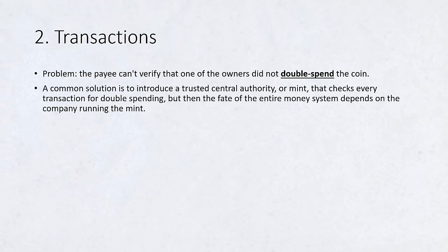A common solution is to introduce a trusted central authority or mint that checks every transaction for double spending. After each transaction the coin must be returned to the mint to issue a new coin, and only coins issued directly from the mint are trusted not to be double spent. The problem with this solution is that the fate of the entire money system depends on the company running the mint, with every transaction having to go through them, just like a bank.